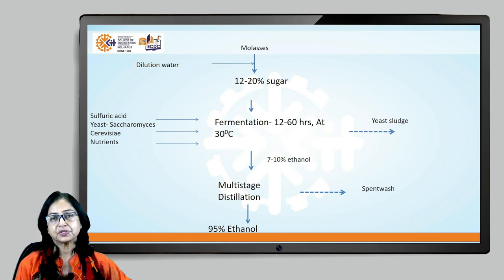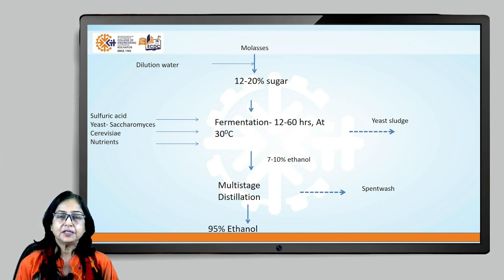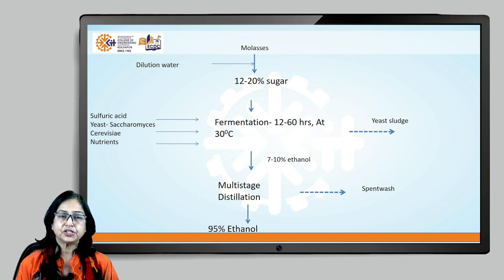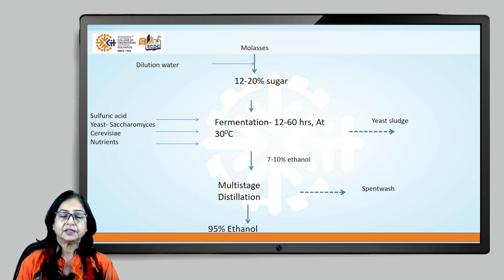The manufacturing process starts with dilution of sugar content. Water — known as dilution water — is added to molasses until the sugar content comes down to 12 to 20 percent, giving diluted molasses. This is then subjected to fermentation. Fermentation is carried out under acidic conditions, so sulphuric acid is added, then specially prepared yeast culture is added along with all nutrients needed for yeast growth. The process may take 12 to 60 hours and the temperature must be maintained at 30 degrees Celsius.